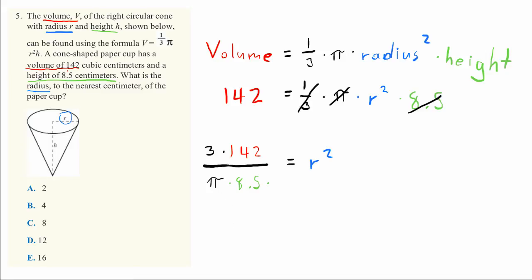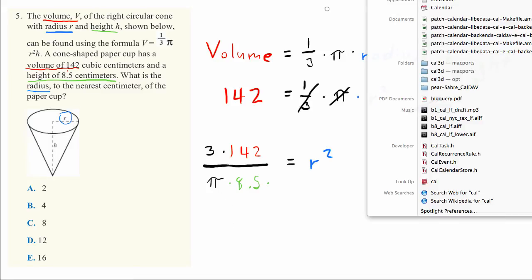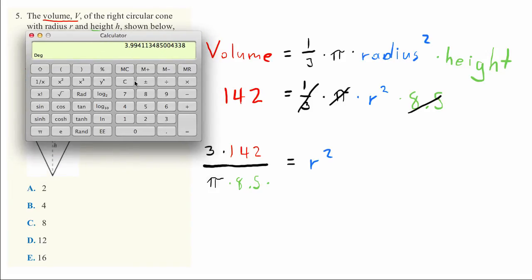Now let's plug this into our calculator. We have 3 times 142 equals 426, divided by 8.5 equals a little over 50, divided by pi - I'll use 3.14 for pi. Our answer is 15.96.